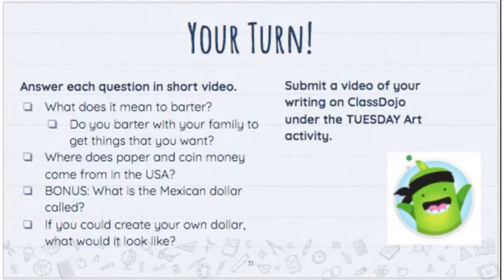Your turn! Today your activity is to answer each question in a short video: What does it mean to barter? Do you barter with your family to get things you want? Where does paper and coin money come from in the USA? Bonus: What is the Mexican dollar called? And my last question — if you could create your own dollar, what would it look like? Please draw a picture and share it in the video. Submit a video of your activities on ClassDojo under Tuesday.